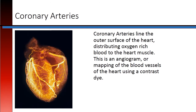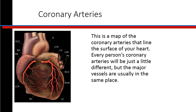Coronary arteries line the outer surface of the heart, distributing oxygen-rich blood to the heart muscle. This is an angiogram, or a mapping of the blood vessels of the heart using a contrast dye — a map of the coronary arteries that line the surface of your heart. Every person's coronary arteries will be just a little bit different, but the major vessels are usually in the same place.